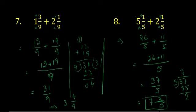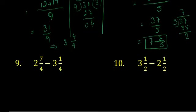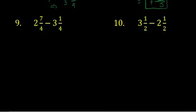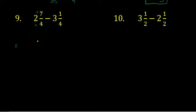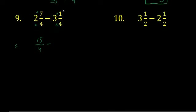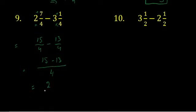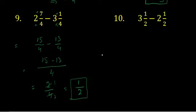Now move to question number 9. I am giving some time to solve questions 9 and 10, then I will do them quickly. We convert: 4 twos are 8, plus 7 gives 15 upon 4. And 4 threes are 12, plus 1 gives 13 upon 4. The denominator is the same, so we write it once and subtract: 15 minus 13 is 2 upon 4. We can divide by 2: 2 ones are 2, 2 twos are 4. The answer is 1 upon 2.